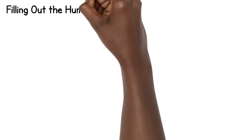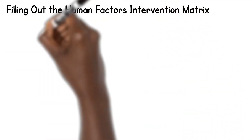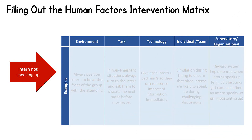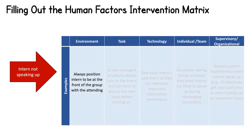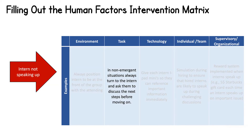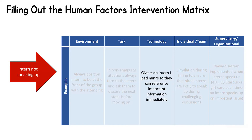Let's walk through an example. Let's say that the issue we are trying to resolve involves an intern having the correct information to prevent an error but failing to speak up. An environmental intervention may involve repositioning everyone on the team so that the intern is always at the front of the group with the attending, so they feel encouraged to speak up. With respect to the task, perhaps you can change the process so that in all non-emergent situations the attending always turns to the intern and asks them to discuss the next step before moving on. A technological solution may involve giving all new interns iPad minis so they can reference important information immediately during the case and feel confident in their ability to double-check information and speak up.